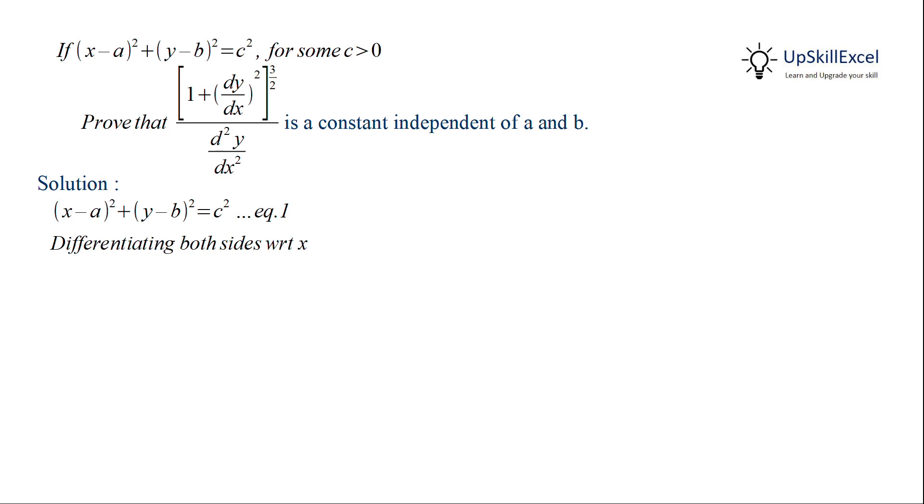So let's differentiate this with respect to x on both sides. Now we can cancel the two and then rearrange the term to get (x - a) in terms of (y - b).